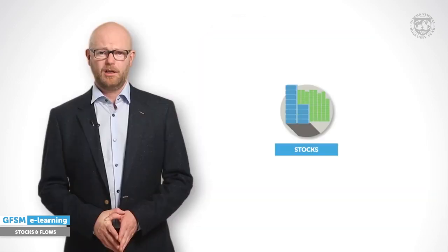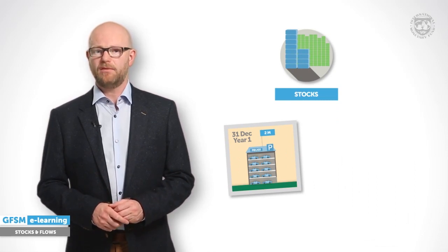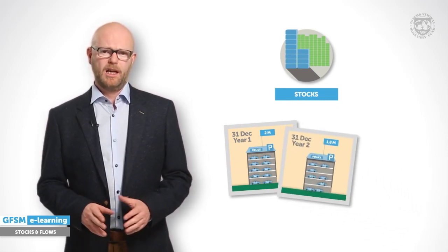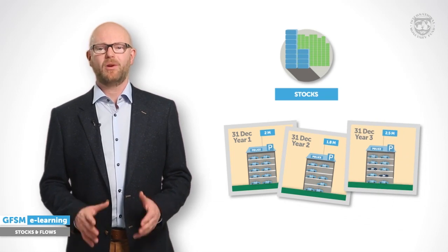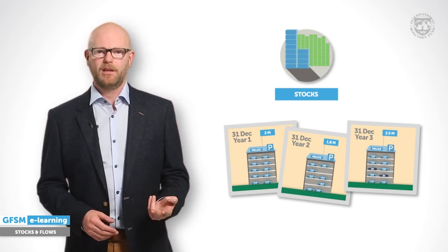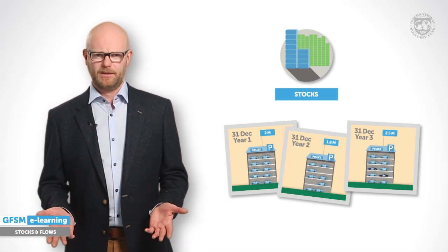A government takes stock of its possessions periodically. By this exercise, it knows the structure of its assets and their total value. Over time, the government takes these snapshots and will see the value of its possessions evolve. However, these snapshots don't allow you to understand what happens between two points in time. Rather than snapshot photos, one would need a movie for that. And this brings us to the other statistical measure: flows.